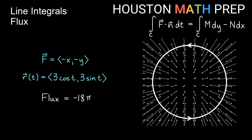Looking at our field and path together, we now have a radial field with everything flowing toward the origin. At any point along the path traveling counterclockwise, the flow is going to my left rather than my right — this is inward flow for a closed curve. We're getting the same magnitude of flux as in the first example (18π), but in the opposite direction. Inward flow gives us negative flux.